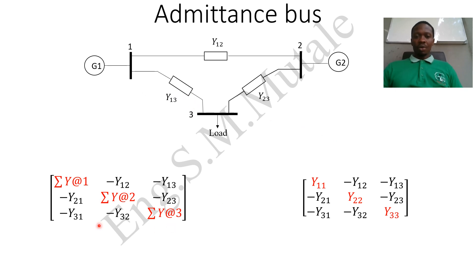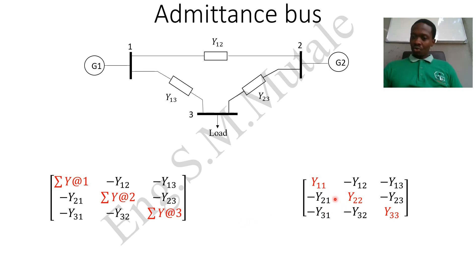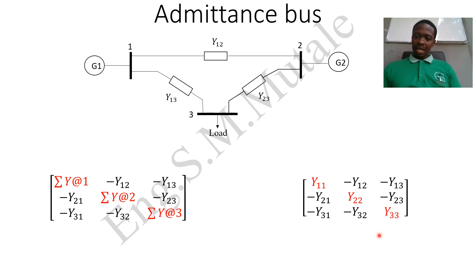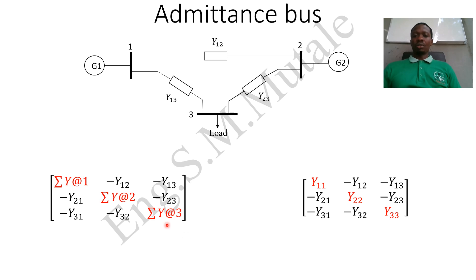To help remember the notation: for a three-by-three matrix, the first row elements are Y11, Y12, Y13; second row Y21, Y22, Y23; third row Y31, Y32, Y33. For a four-by-four matrix the fourth row would be Y41, Y42, Y43, and so on. The diagonal elements are positive summations, while all off-diagonal elements are negative.